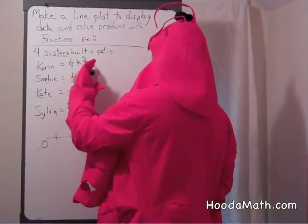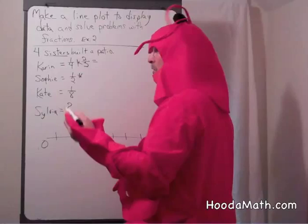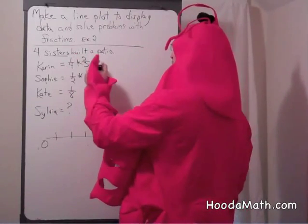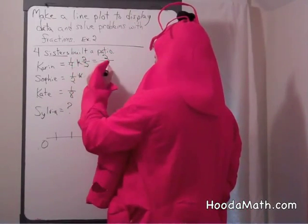So we have to multiply by two over two, which is a form of one to get an equivalent fraction. Two times one is two. Four times two is eight.